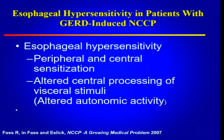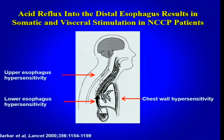We know that patients with non-cardiac chest pain demonstrate esophageal hypersensitivity, which can be due to peripheral and central sensitization or altered central processing of visceral stimuli. Studies from Dr. Cassim Aziz showed that if you expose patients with NCCP to reflux in the lower esophagus, they also develop increased sensitivity in the upper esophagus — which was not exposed to acid — and simultaneously develop sensitivity at the chest wall. These somatic and visceral areas all converge at the same level of the spinal cord, explaining how exposure and increased sensitivity in the lower esophagus can result in widespread hypersensitivity.